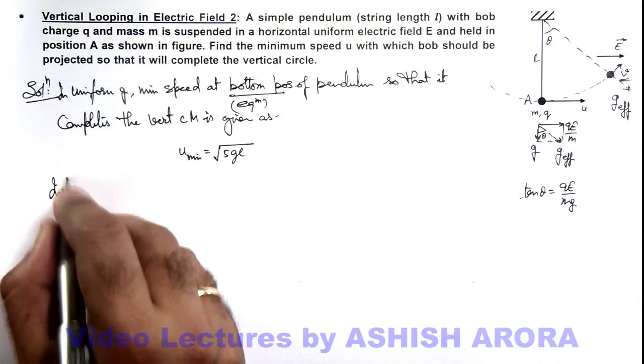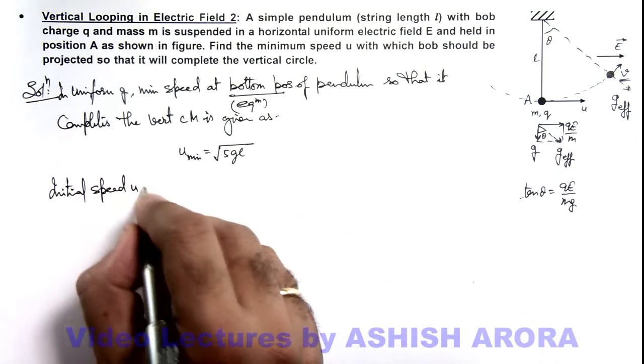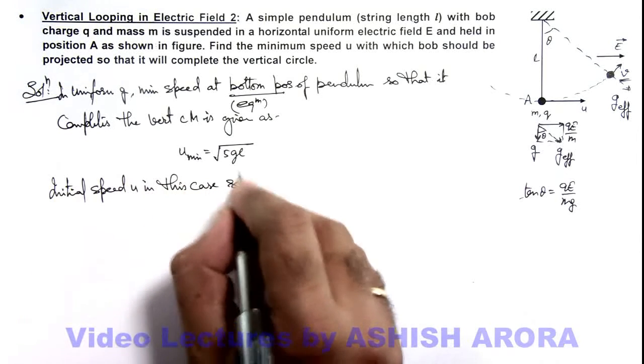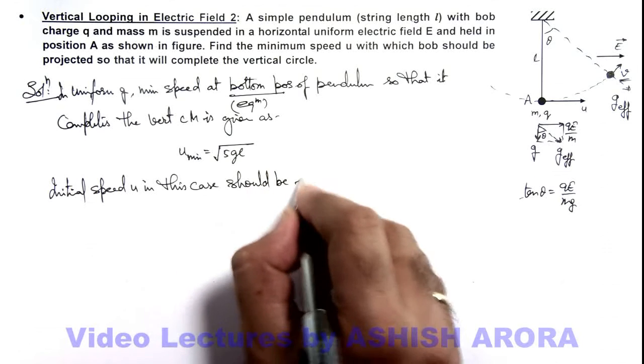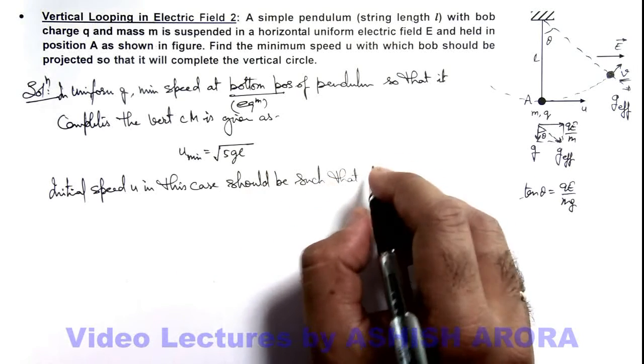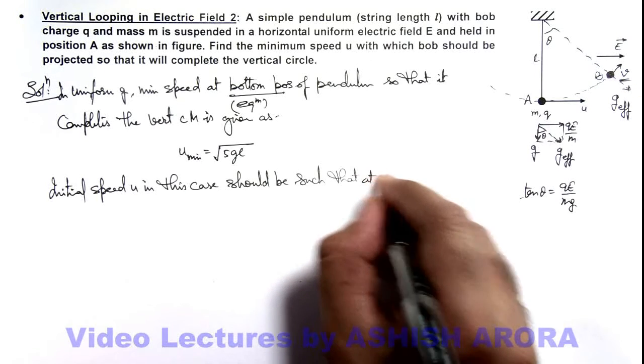Initial speed u in this case should be such that at B, say if this point is B, such that at B.